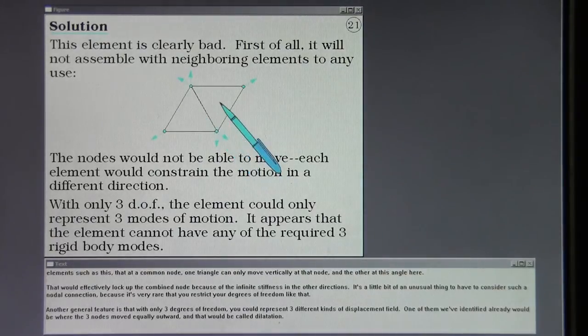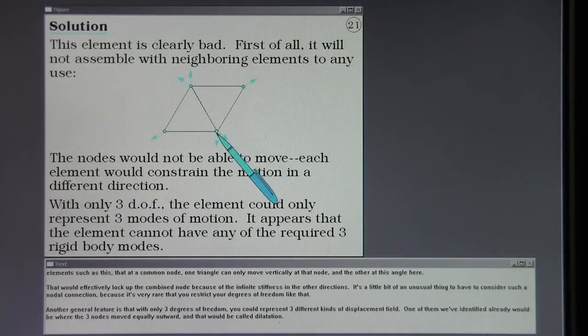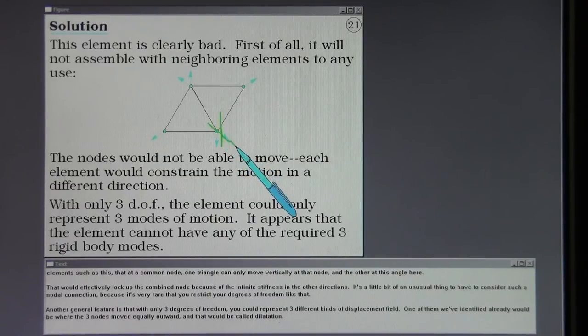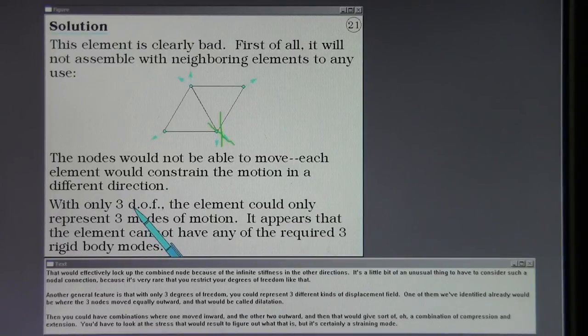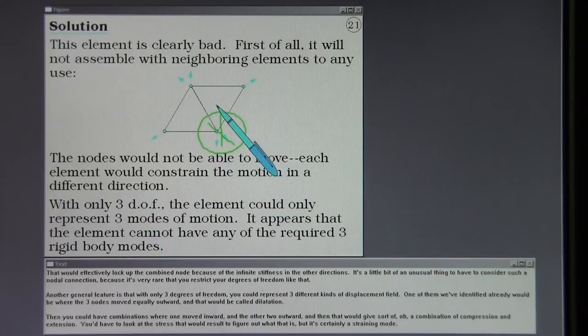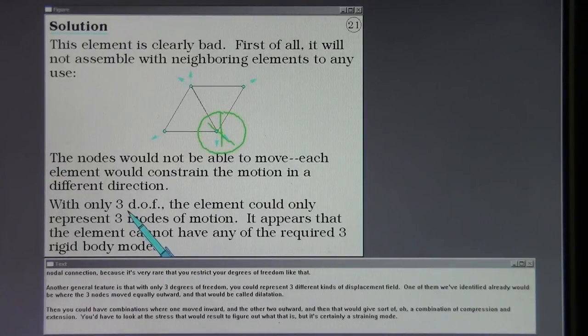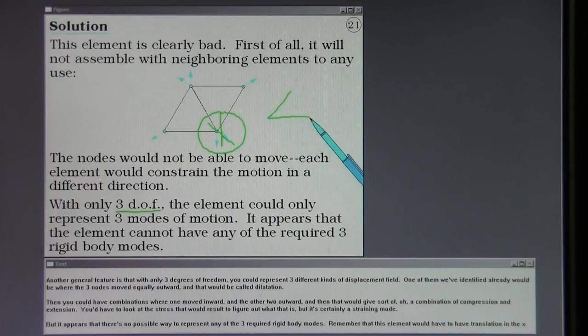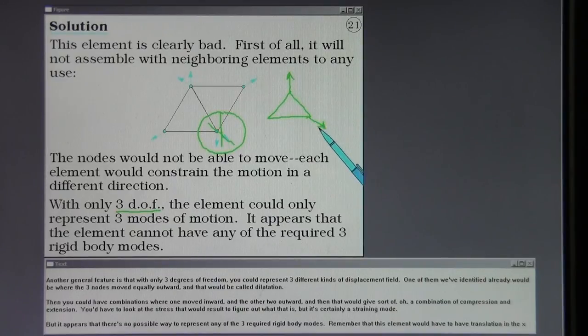Notice when I have two adjacent triangular elements such as this, that at a common node, one triangle can only move vertically at that node and the other at this angle here. That would effectively lock up the combined node because of the infinite stiffness in the other directions. It's a little bit of an unusual thing to have to consider such a nodal connection because it's very rare that you restrict your degrees of freedom like that. Another general feature is that with only three degrees of freedom, you could represent three different kinds of displacement field. One of them we've identified already would be where the three nodes moved equally outward, and that would be called dilatation. Then you could have combinations where one moved inward and the other two...